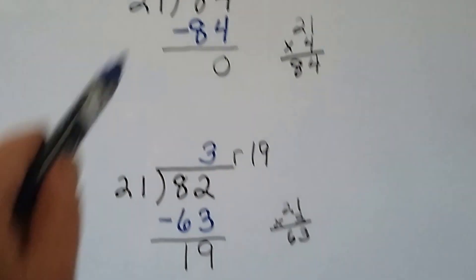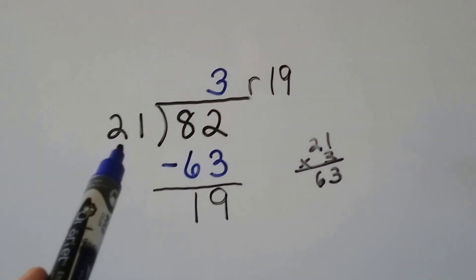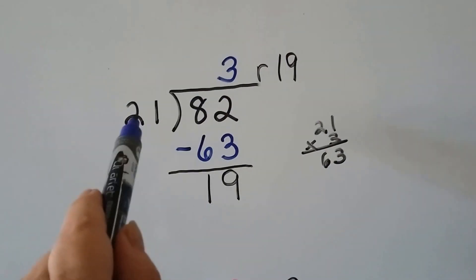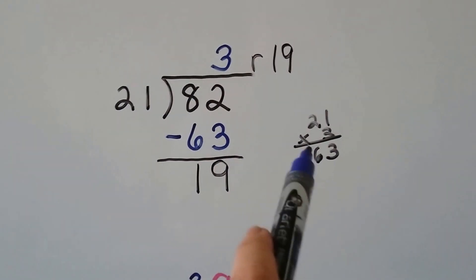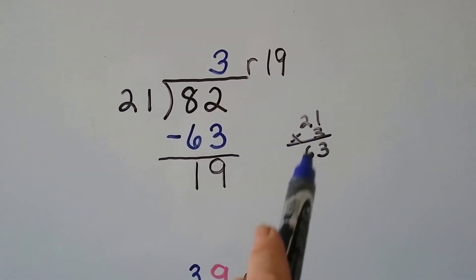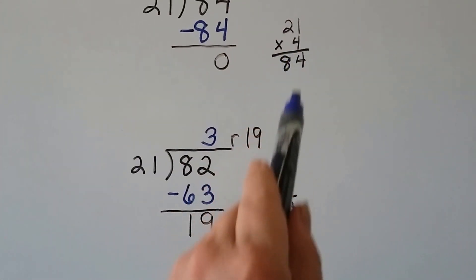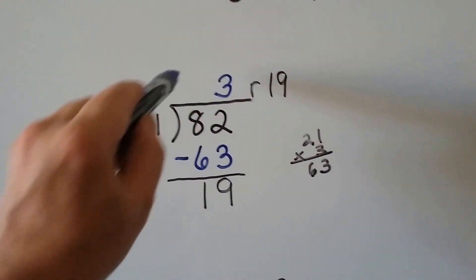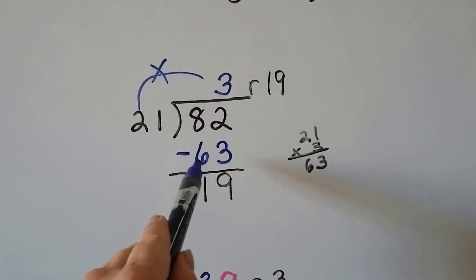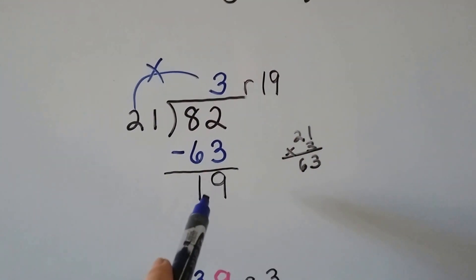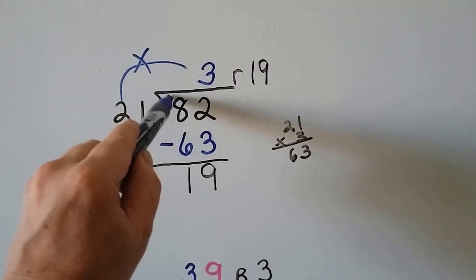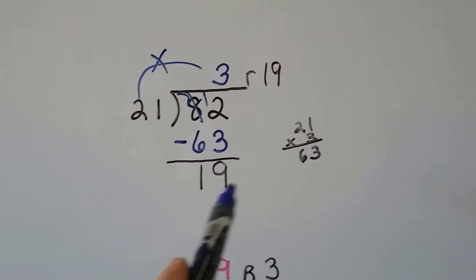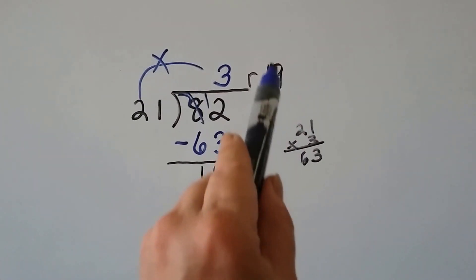Now what if it wasn't 84, but an 82? How many times can 21 fit into 8? None. How many times can 21 fit into 82? We do a little multiplication on the side: 21 times 3 is 63. But 21 times 4 is 84, and that's too big, so we go with the 3. We put a 3 up here, do 21 times 3 to get 63, and subtract it from 82. We regroup — this becomes a 7, that becomes a 12 — and we get 19. So we have a remainder of 19.